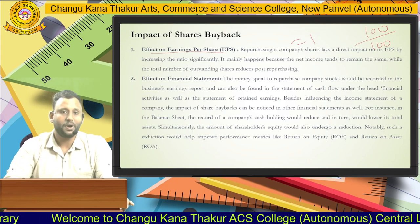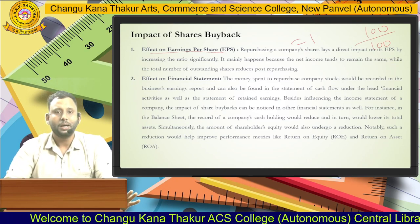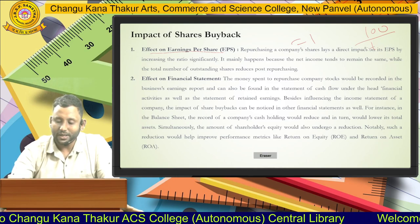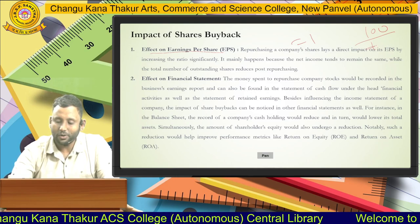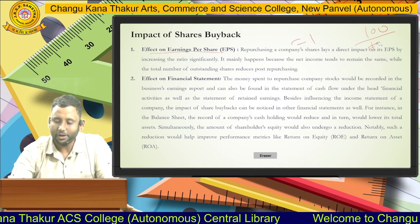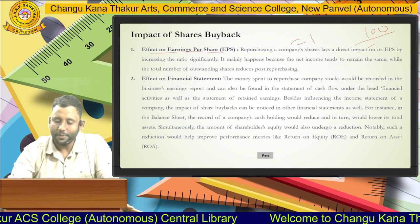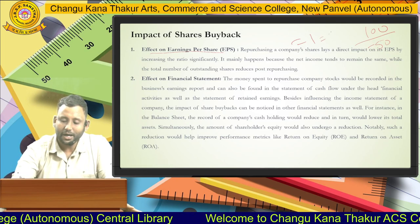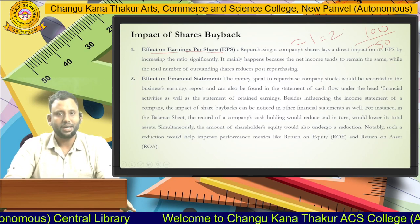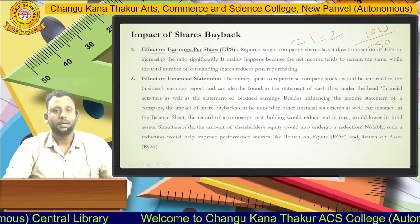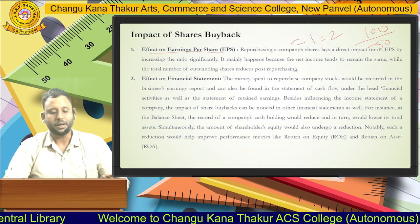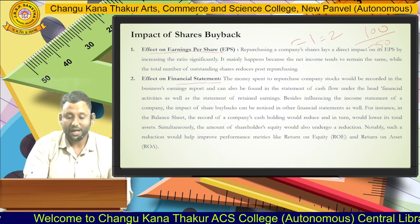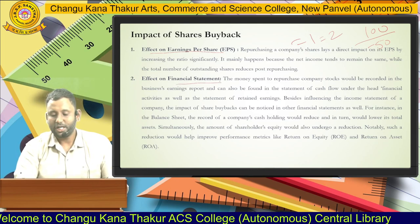But when the number of shareholders is reduced — say for example to 50 shareholders — every shareholder will automatically get 2 rupees. So the EPS, that is earnings per share, will increase. That is the first effect.